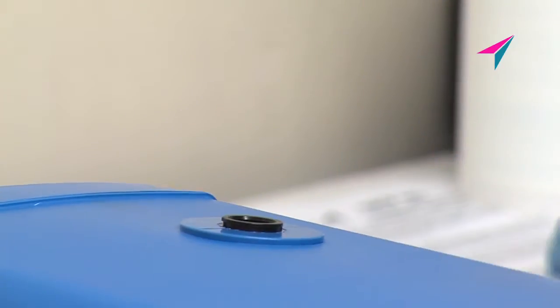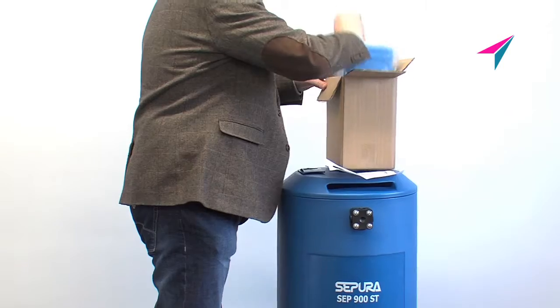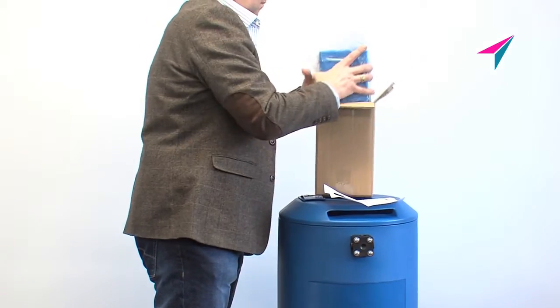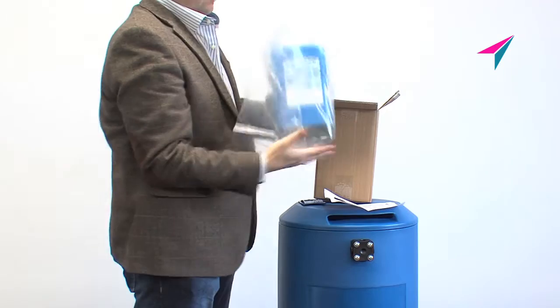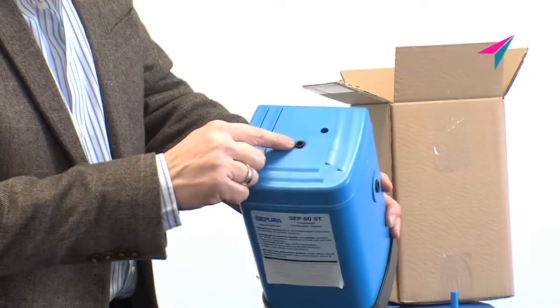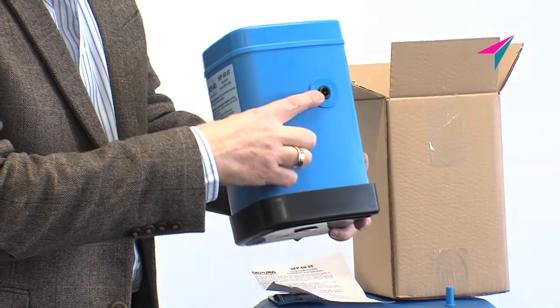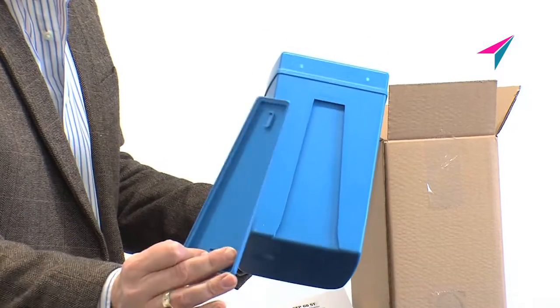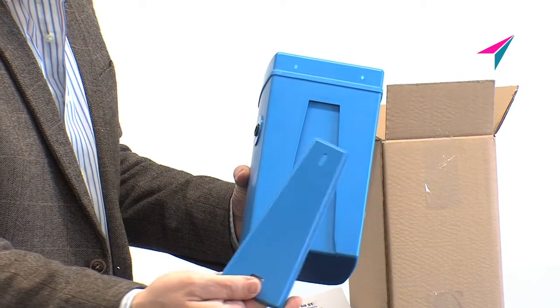This product is so easy to use. Open the box and remove the SEP60. Simply connect to the inlet and to the outlet. The SEP60 comes with a unique wall mounting bracket.